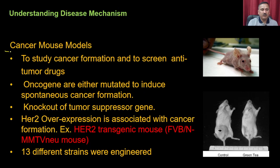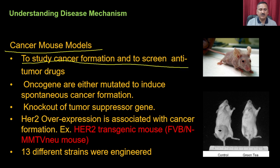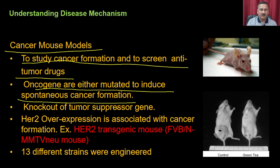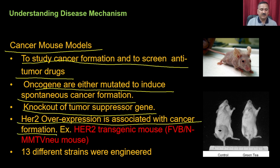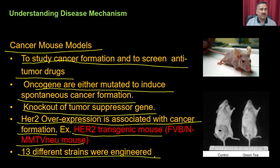Cancer mouse models are very common — for example, the nude mouse. To study cancer formation and screen anti-tumor drugs, oncogenes are either mutated to induce spontaneous cancer formation, or tumor suppressor genes such as RB or p53 are knocked out. HER2 overexpression is also associated with cancer formation. The HER2 transgenic mouse (FVB/N-MMT-neu mouse) has 13 different engineered strains that spontaneously develop cancer, mimicking the natural way cancer develops.